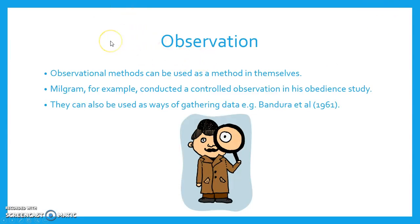Observational methods can be used as a method in themselves. Milgram, for example, conducted a controlled observation in his study on obedience. They can also be used as ways of gathering data, e.g. Bandura.